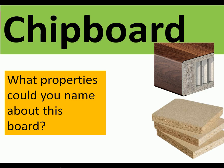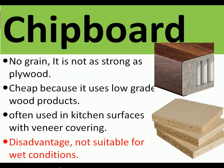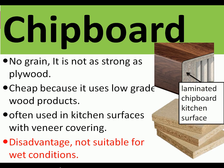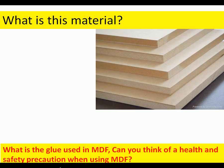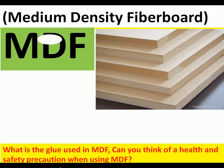Chipboard is made from little wood chips. It has no grain so it's not as strong as plywood, but it's very cheap because it uses the lowest-grade wood products. It's often used in thick kitchen worktops but needs a plastic coating on the outside, because if it gets wet it absorbs water and swells up — making it unsuitable.